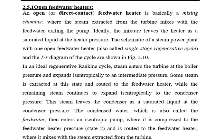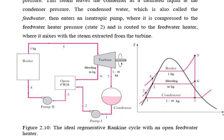The steam enters the turbine at boiler pressure and expands isentropically to the intermediate pressure. Some steam is taken from that state and goes to the feed water heater, while the remaining steam continues isentropically to the condenser pressure. The steam leaves the condenser as a saturated liquid at condenser pressure, also called the feed water, and then enters the isentropic pump. The main components are the pump, boiler, turbine, condenser, pump one, and the open feed water heater.